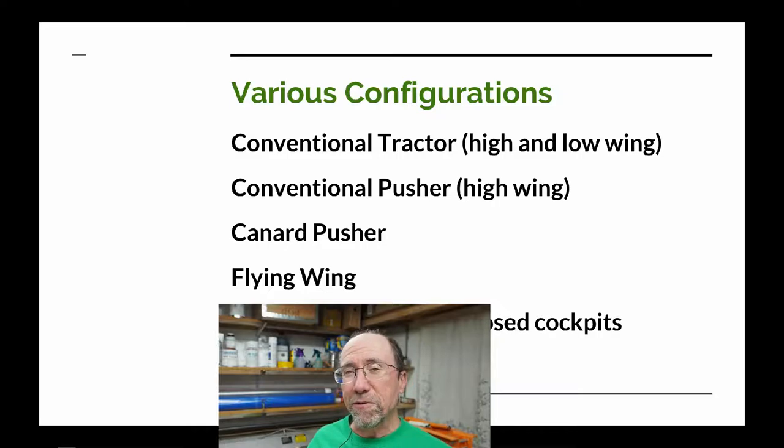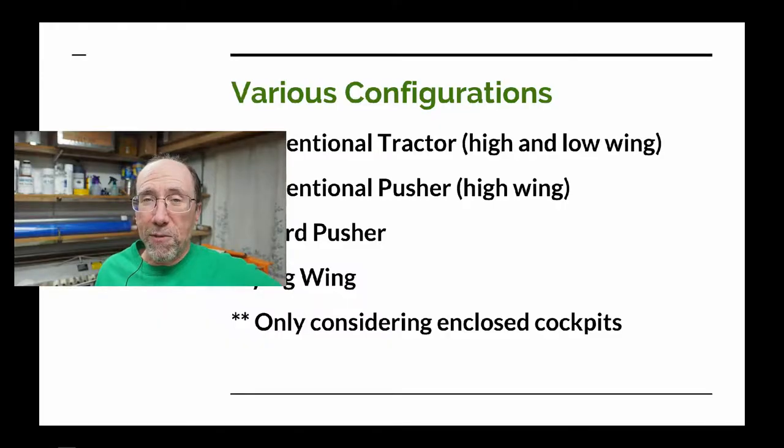Another possibility, used by a number of ultralights, is the flying wing. Some of these airplanes don't even have an enclosed cockpit — the chair is just out in the open breeze, held up by a few tubes. That gives you the ultimate view, but we had a goal of an enclosed cockpit, so we're not going to consider those configurations.